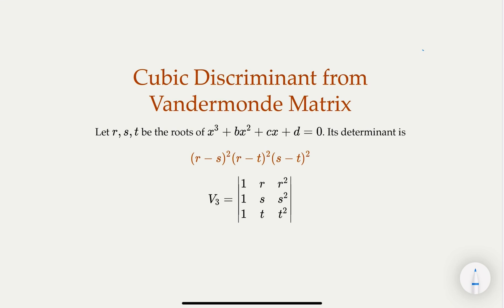So r, s, t would be the roots of this cubic equation. The Vandermonde matrix is very common in many different fields of mathematics, and this is the form for dimension three with three variables.